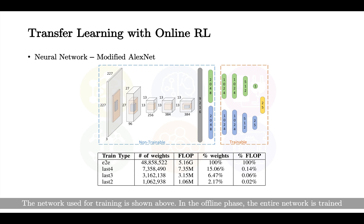The network used for training is shown above. In the offline phase, the entire network is trained, while in the online phase, only the last four, last three, and last two layers of the network are trained.